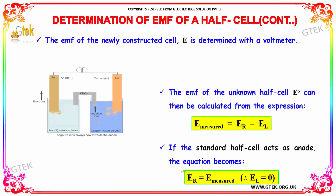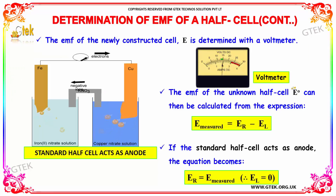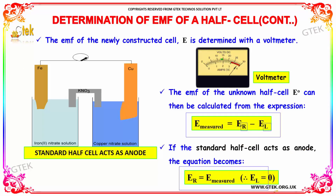The EMF of the newly constructed cell E is determined with the voltmeter. The EMF of the unknown half cell E0 can then be calculated from the expression E measured, which is equal to ER minus EL, where R and L represent the right side and left side respectively. If the standard half cell acts as an anode, the equation becomes ER equal to E measured, and therefore the value of EL will be 0.